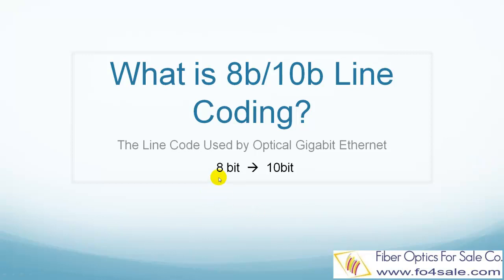8-bit, 10-bit encoding is used by fiber optic gigabit Ethernet. In this coding, each 8-bit data is mapped to a 10-bit data and then transmitted to the receiving side. Let's see why we need to go through this extra step.